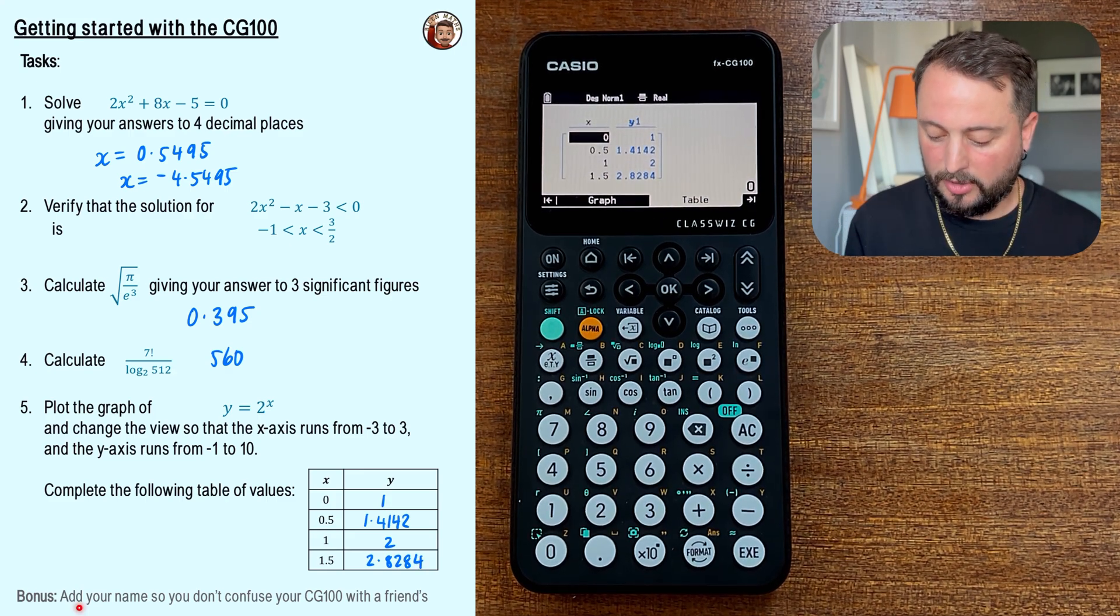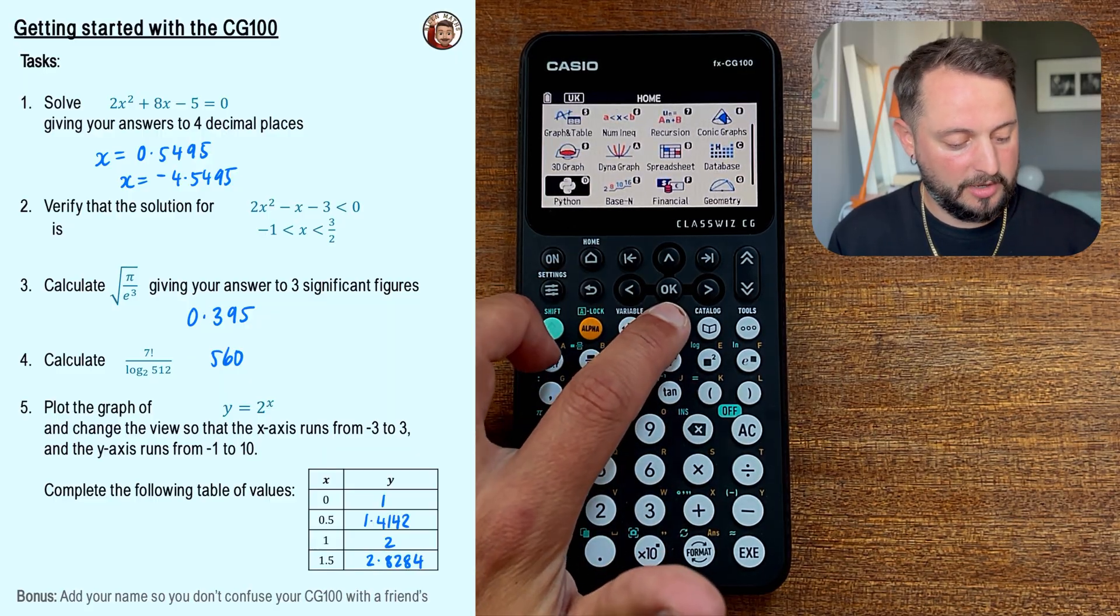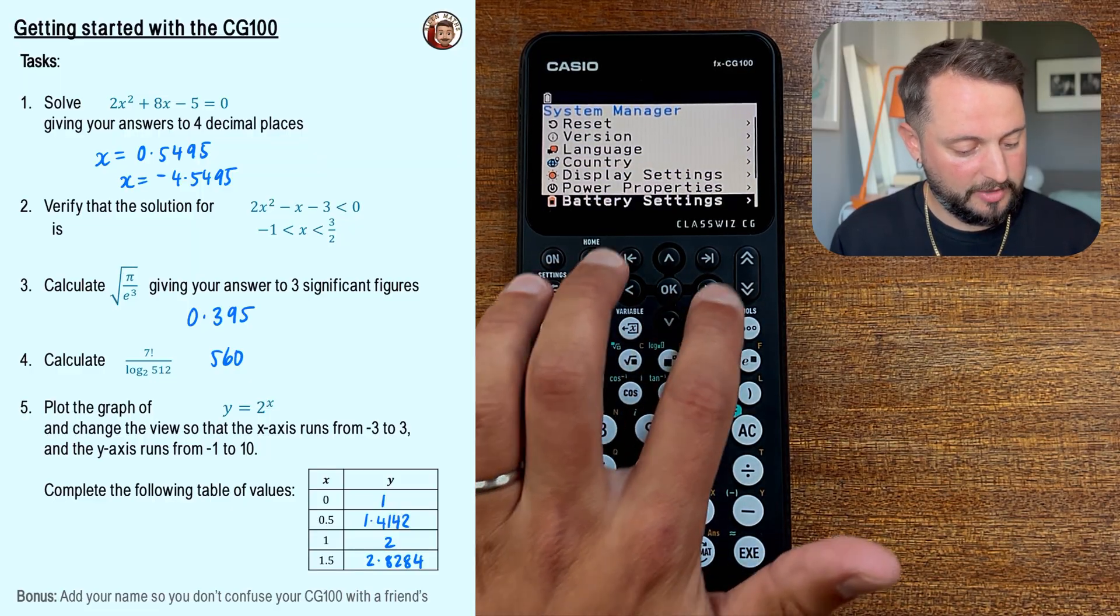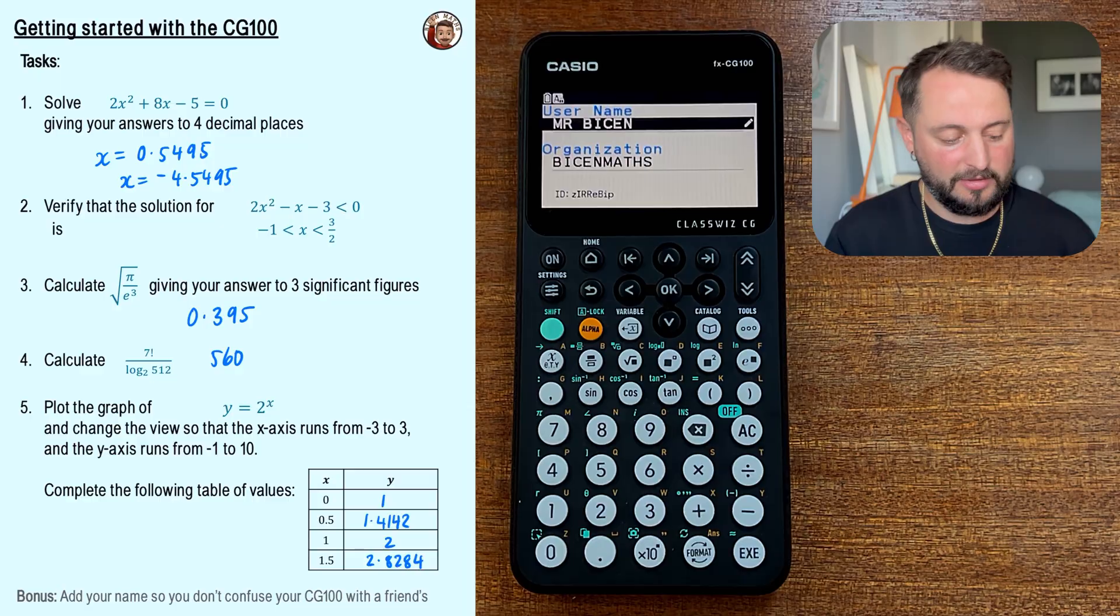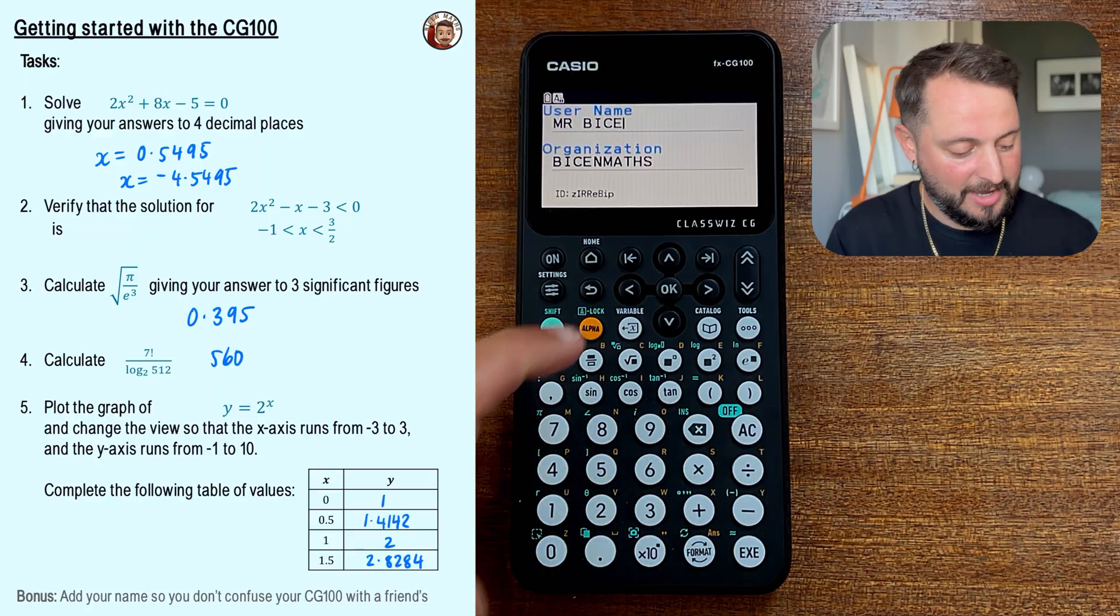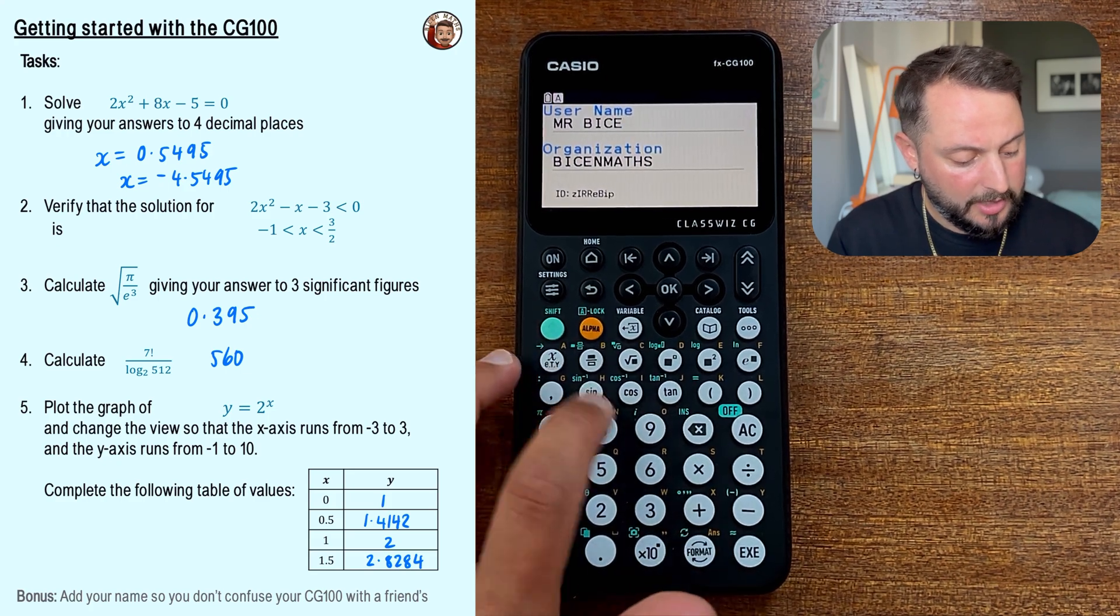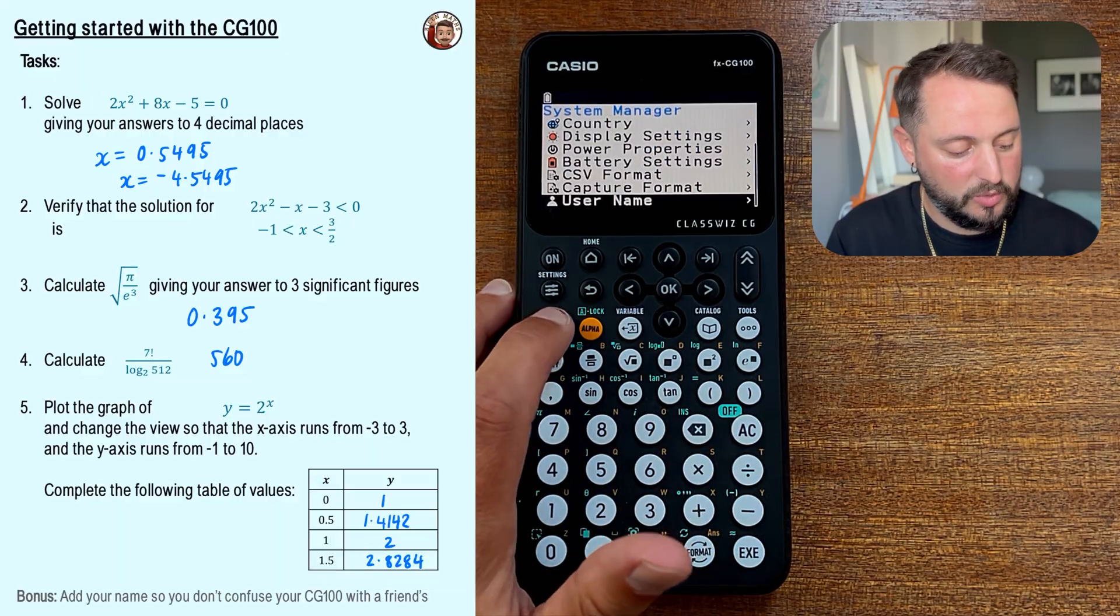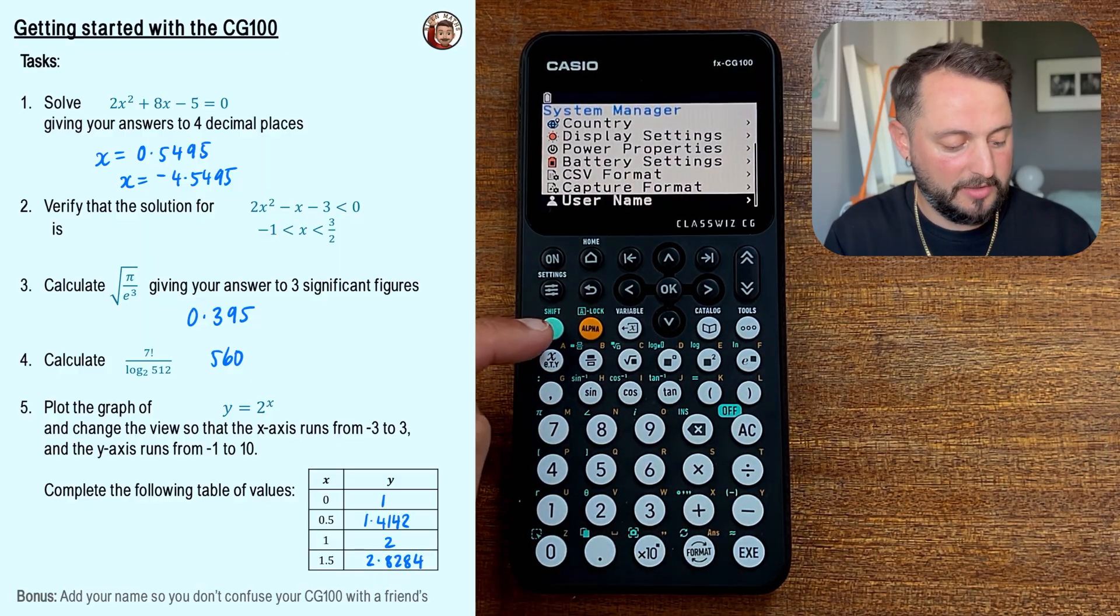And then the last thing I wanted to talk to you about was this little bonus task. Add your name so you don't confuse your CG100 with a friend's. So if I go back to the home screen and I'll scroll down to this system settings that we've got here. If you go down to a little bit further, I probably could have used these to kind of go right to the bottom. If you go down to username, you'll see I've already got mine filled in, Mr. Bison from Bison Maths. You can edit this by pressing OK and you can delete whatever things you want so that you have it as your own. I'll get rid of the N and I will type it in using the alpha buttons. So I will press alpha and then N. Oh my gosh, I didn't do that wrong. Alpha and then N. And then I've got this saved here when I press back. So this means when you turn off the calculator, your name and your school will appear there. I'll just show you that one more time. When you turn off the calculator by pressing shift and then all clear, your name appears there.